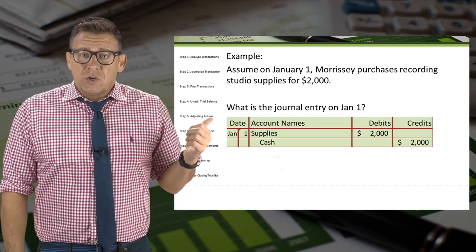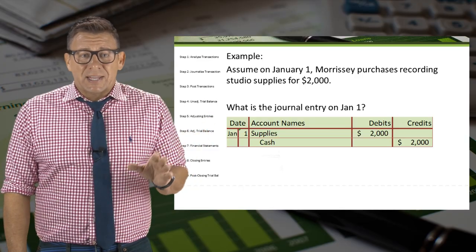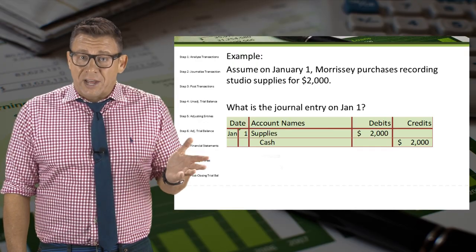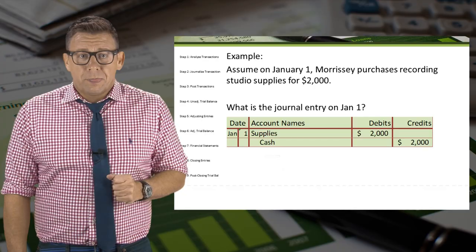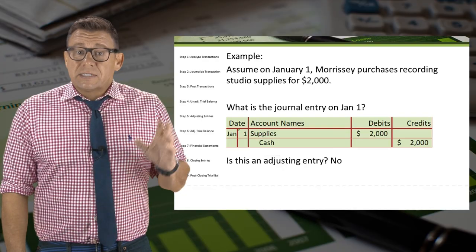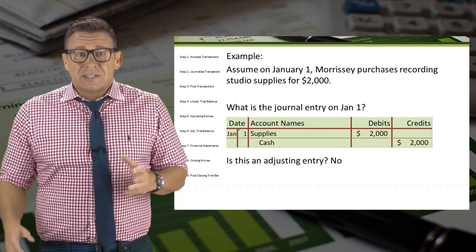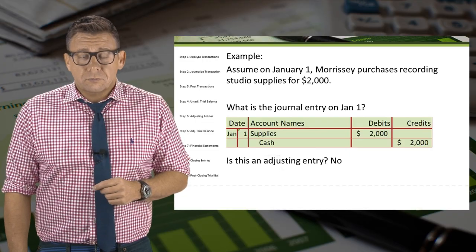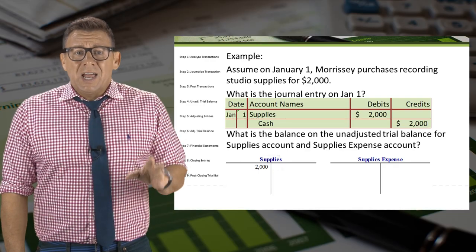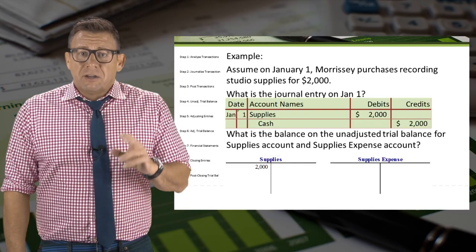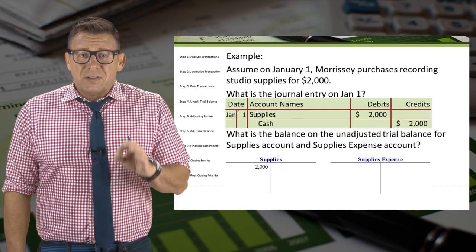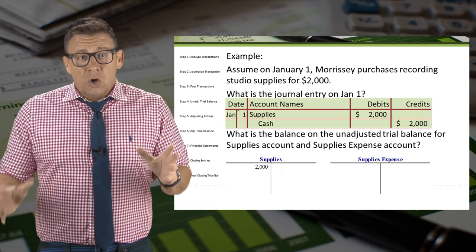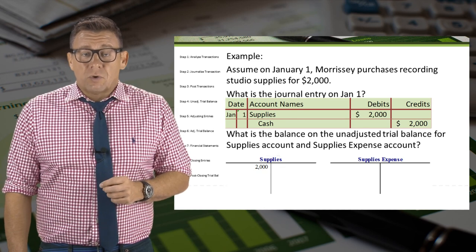The journal entry on January 1 is a debit to the asset account supplies and a credit to the asset account cash for $2,000. This is not an adjusting entry because there's an underlying transaction that happened on January 1. So the unadjusted trial balance for supplies at the end of the month is still $2,000. As of yet, no supply expense has been recorded.